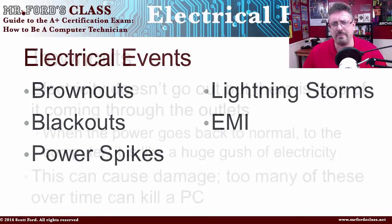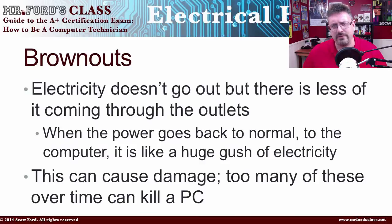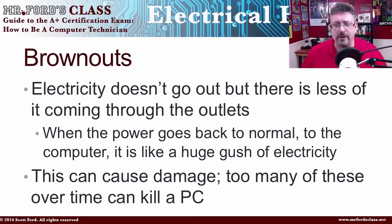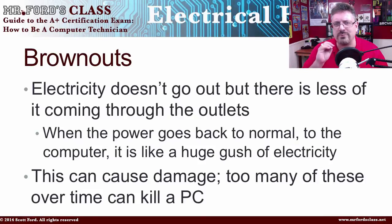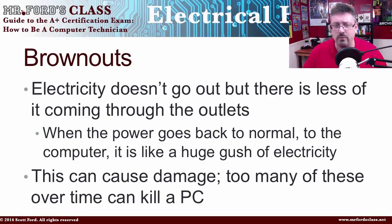Let's begin by talking about brownouts. If you've ever lived in an apartment or dorm or anything like that, you know that when somebody flushes a toilet while you're taking a shower, the water pressure changes — it either gets crazy cold or crazy hot. And that's what a brownout is. It's not a turning off of the water; it's a dropping of the water pressure. The water goes down, doesn't come out with the same force. In this case, the brownout would be electrical.